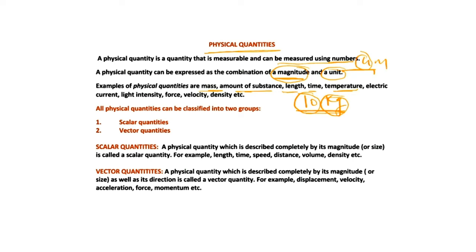We can classify physical quantities into two groups. The first group is scalar quantities and the second is vector quantities. A scalar quantity is a physical quantity which can be described completely by its magnitude alone — we don't need direction to describe it. Examples include length, time, speed, distance, volume, etc. If we need only a magnitude, that is a scalar quantity.